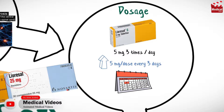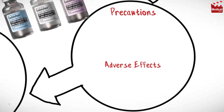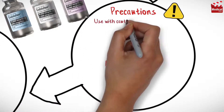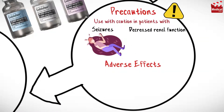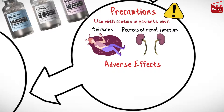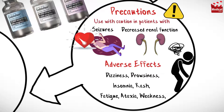The dose may be increased to a maximum of 80 milligrams per day. Baclofen should be used with caution in patients with seizures or decreased renal function. Side effects include dizziness and drowsiness, insomnia, rash, fatigue, ataxia, weakness, and decreased blood pressure.